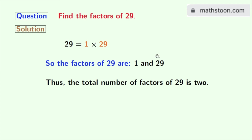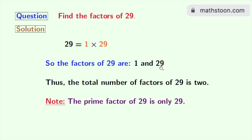Now if we look at these factors, we can say that 29 is a prime number. So the prime factor of 29 is only 29.